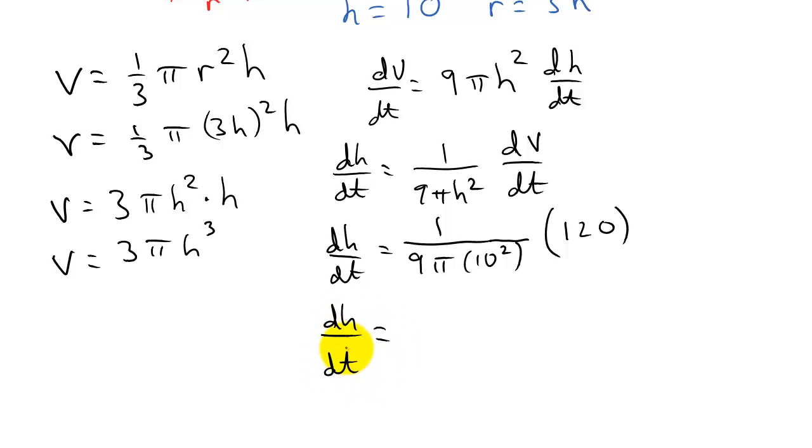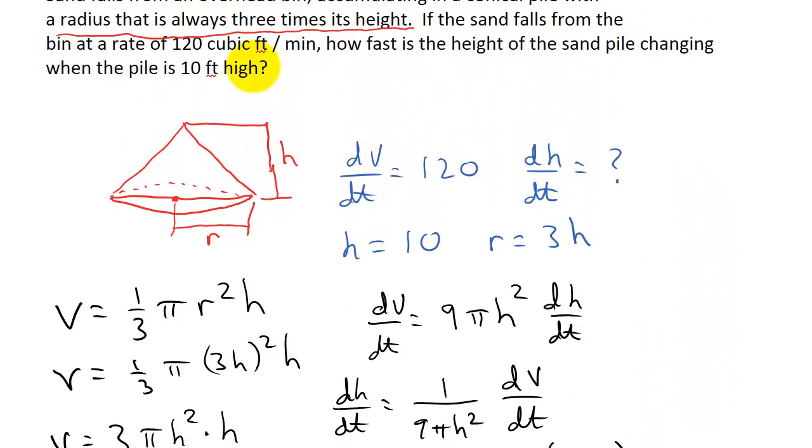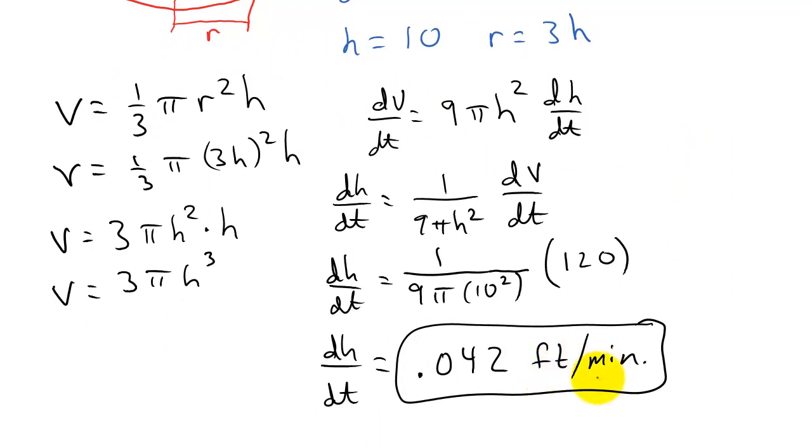And so I get dh dt, the change in the height, and that's what we're looking to find. So if I plug all of this into my calculator, I get 0.042. And then that's going to be feet per minute. They give it in cubic feet per minute and the height's in feet. So that would be feet per minute.